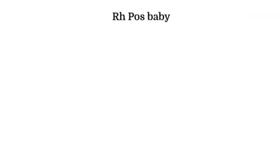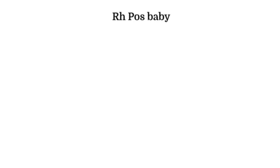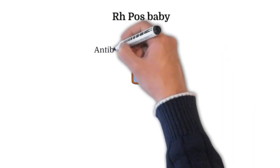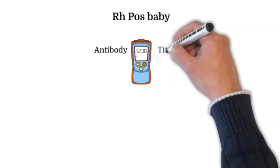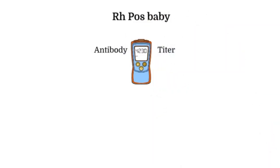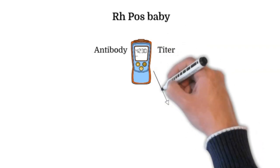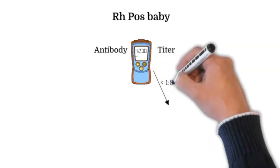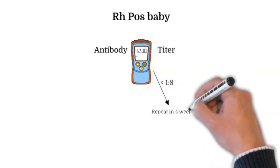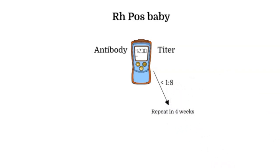Let's assume that the baby is RH positive from our previous examples or if the father testing is not possible. Then the next step would be testing the titer, which is basically antibody level in the maternal blood. If the titer remains below a critical level, which differs from one hospital to another, but generally it's 1 in 8, then we need to repeat the titer in 4 weeks.